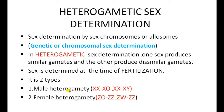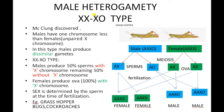Depending upon male heterogamity, sex determination is of two types: XX/XO type and XX/XY type. In female heterogamity, females are heterogametic and males are homogametic — males are ZZ. Remember that when writing the type of sex determination, we mention the female first, then the male. In female heterogamity, the female is heterogametic and the male is homogametic.